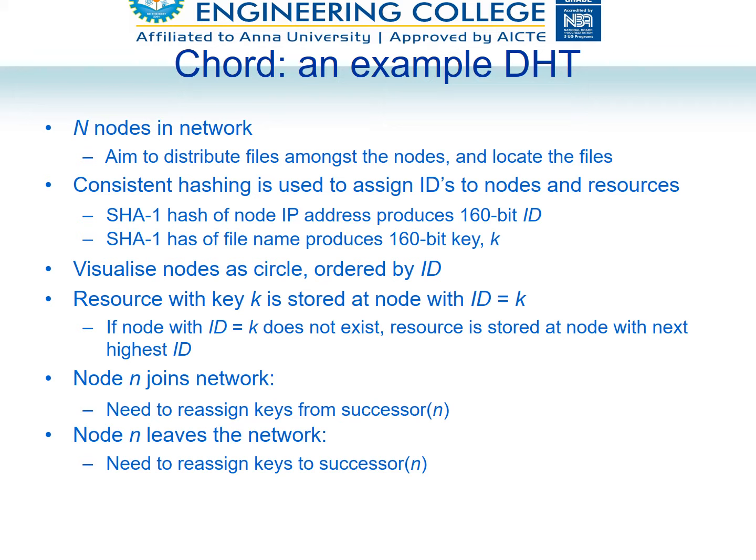Suppose I have a file with key value 10. It is stored in node 10. If node 10 is not available, it will be stored in the successor node — either 11. If 11 is also not present, it is stored in 12.